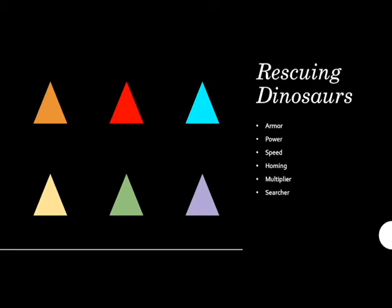Homing allows the ammo to target nearby obstacles and redirects for a direct hit. Multiplier increases the number of items that drop when an obstacle is destroyed. The searcher allows a specific material to become common among the drops, which will make it easier to farm.